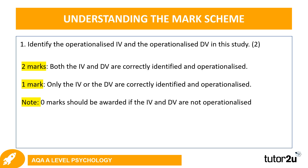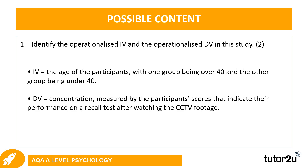Operationalization — people get really scared of that term, but all it means is to be really specific about what the researcher is changing or manipulating and what they're measuring. So what are the two conditions of the experiment and how exactly are we measuring the DV? You may have identified that age was the IV and concentration was the DV, but you have to be really specific. If you just put 'age' without specifying the two groups you wouldn't get any marks. The IV should state: the age of participants, with one group being over 40 and the other under 40.